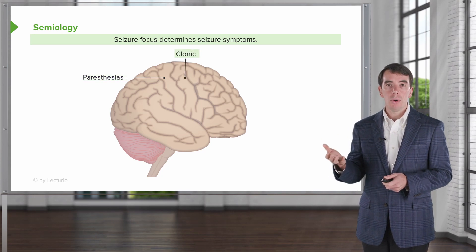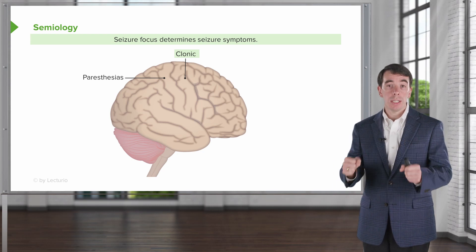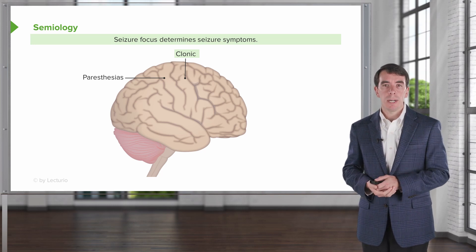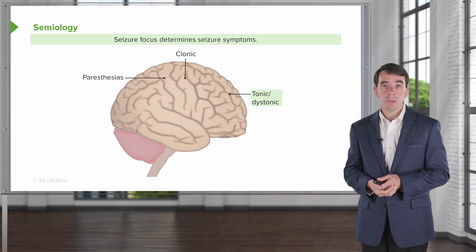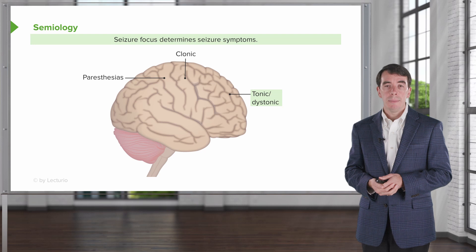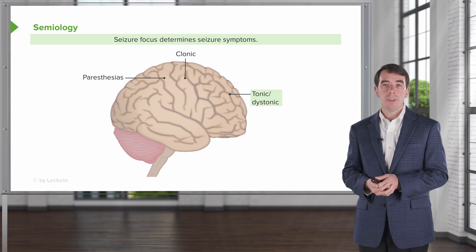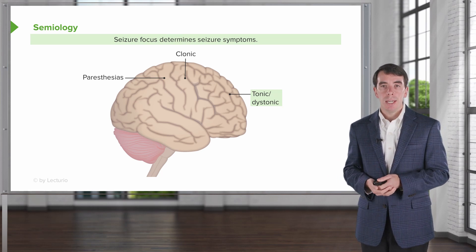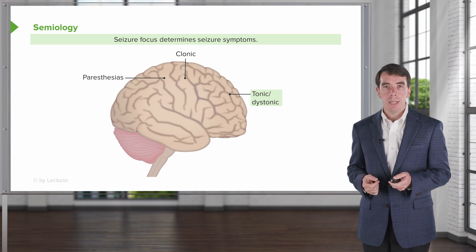Seizures that begin in the primary motor cortex will cause clonic activity — jerking of the arms, legs, face, or a certain part of the body — or tonic activity, which is a stiffened posturing. Tonic activity can also be seen from other frontal seizures. The frontal lobe is the motor lobe, and areas in the anterior frontal lobe are involved in planning motor movements. The supplementary motor area, which we call the SMA, is particularly susceptible to causing dystonic posturing of the body, and we can see that type of semiology from high frontal epileptic areas.